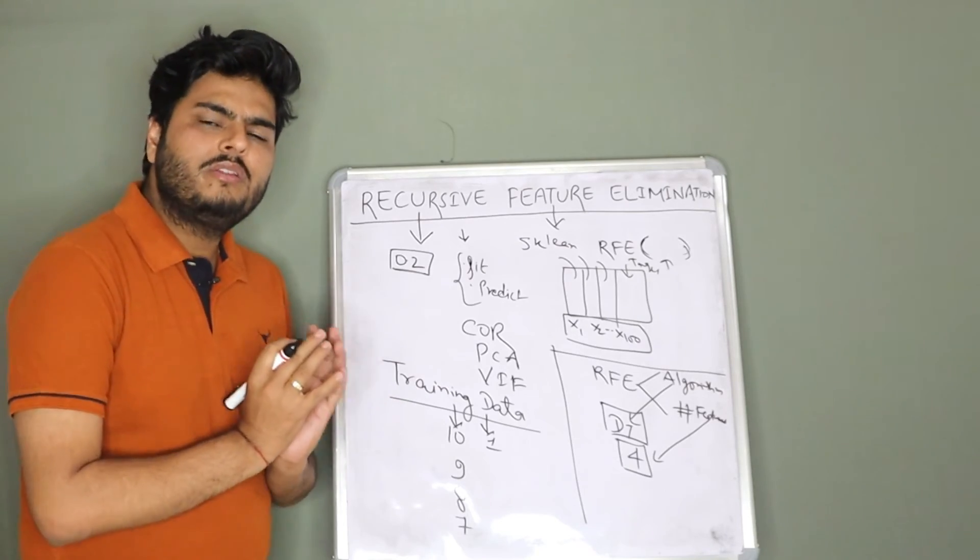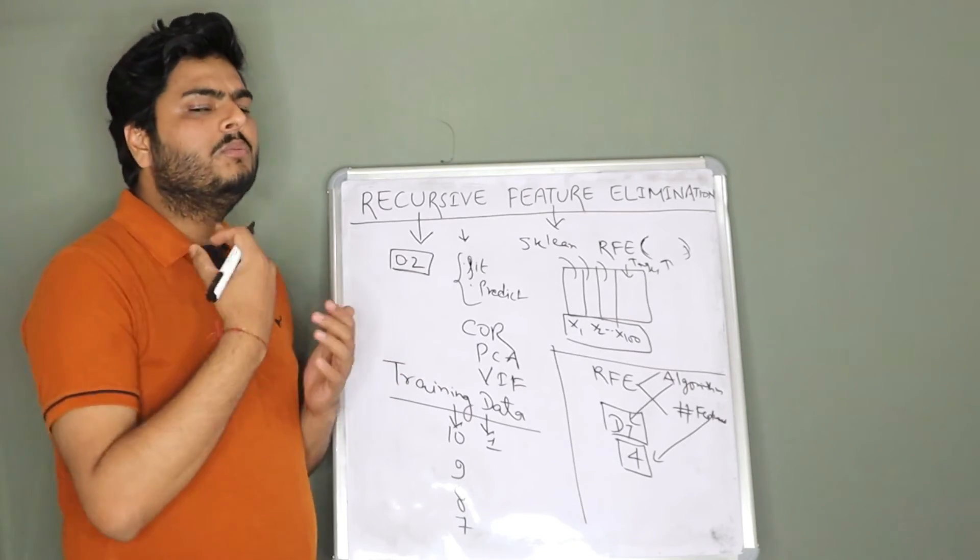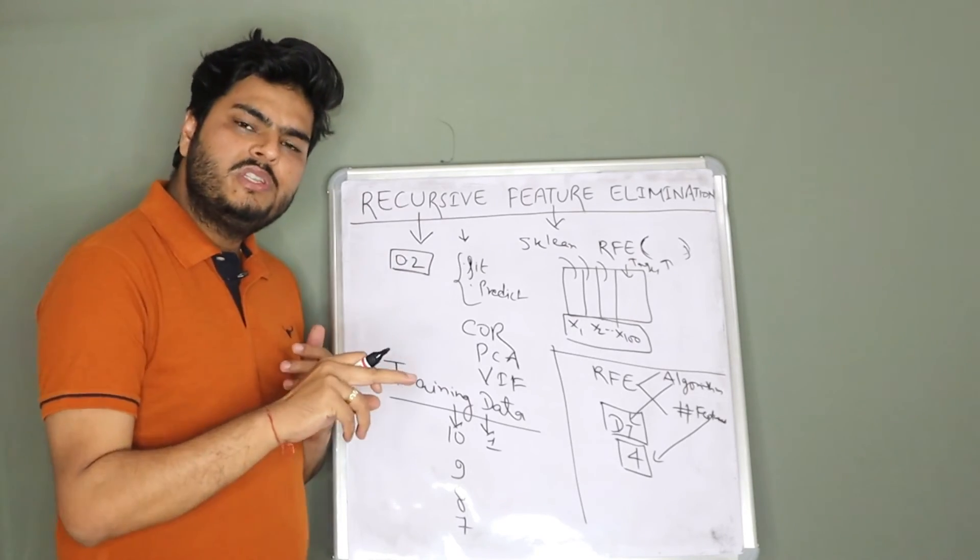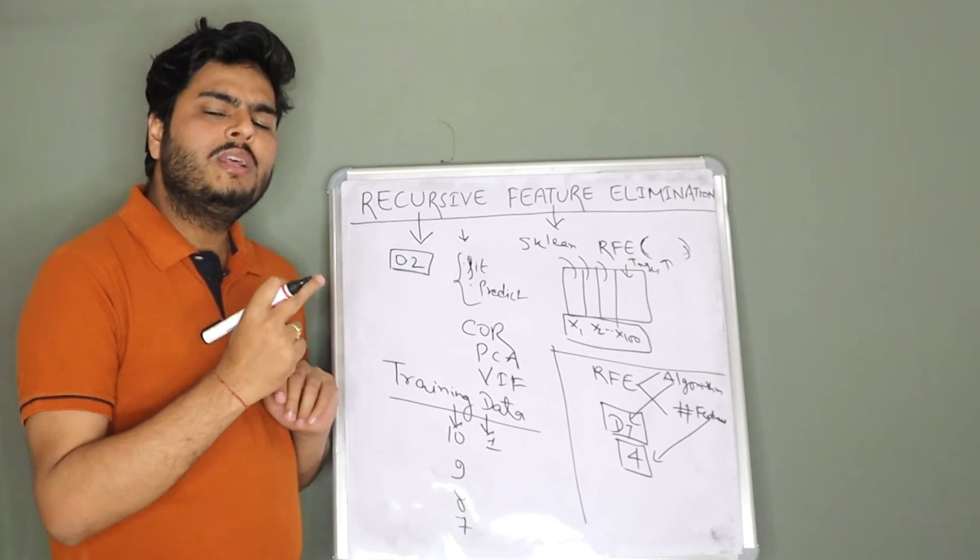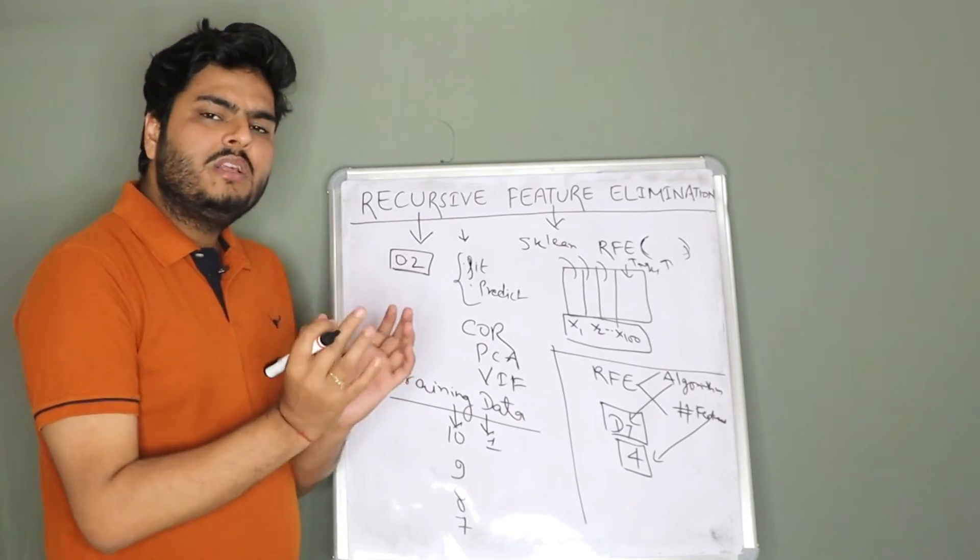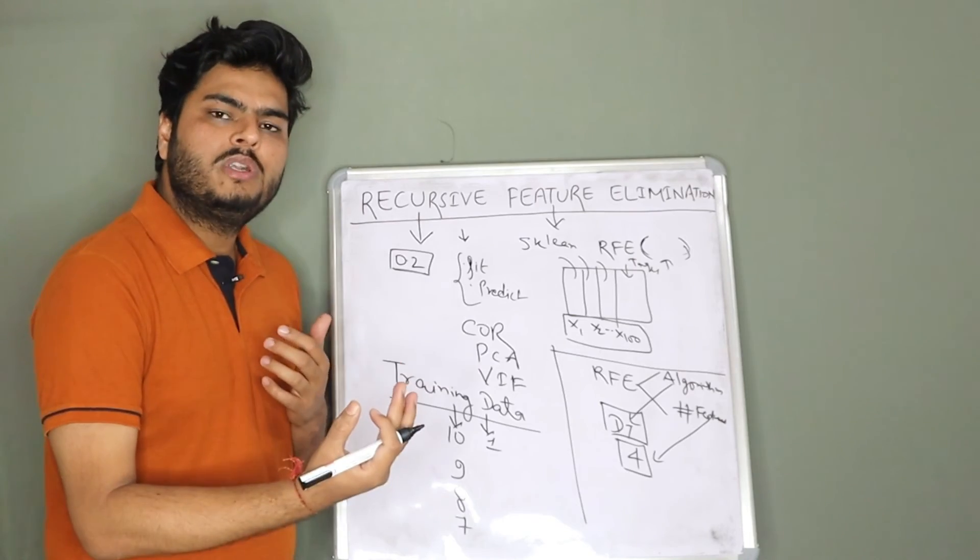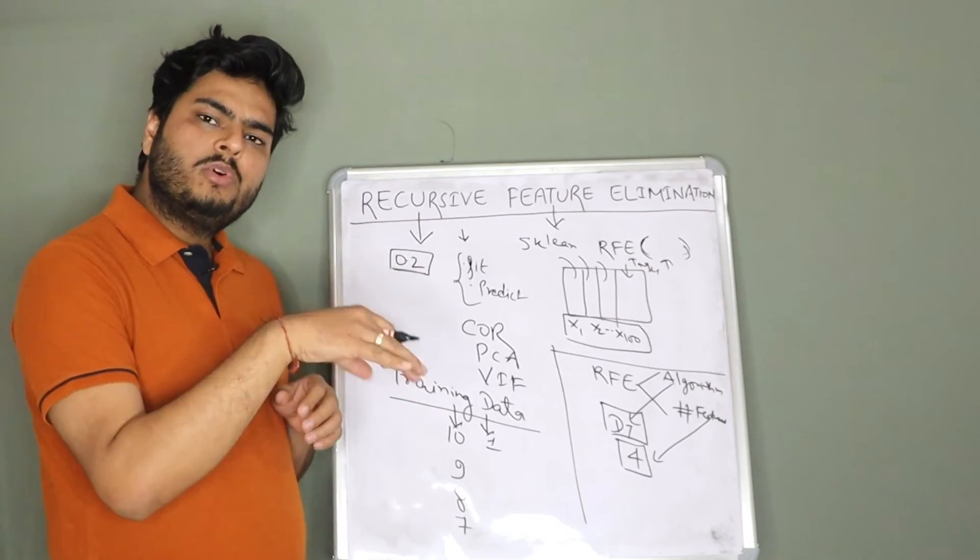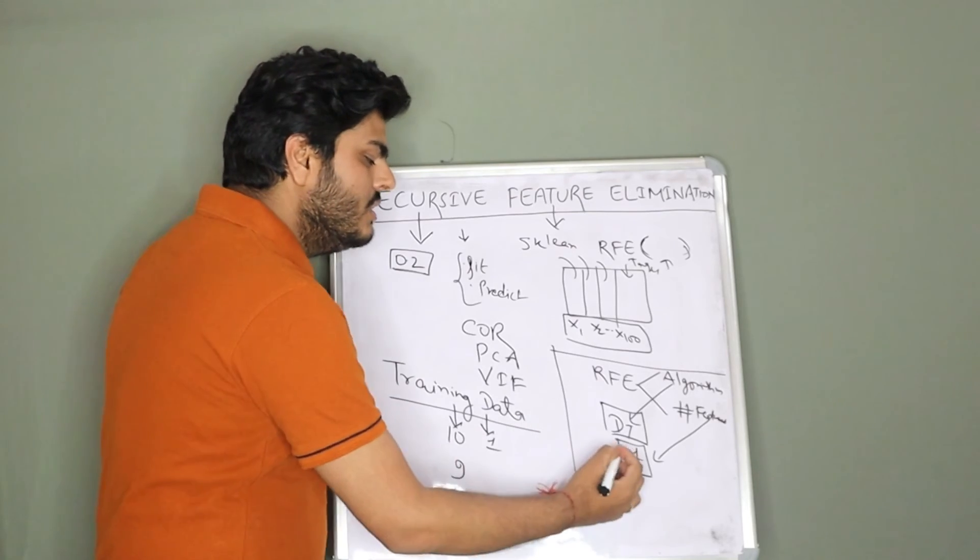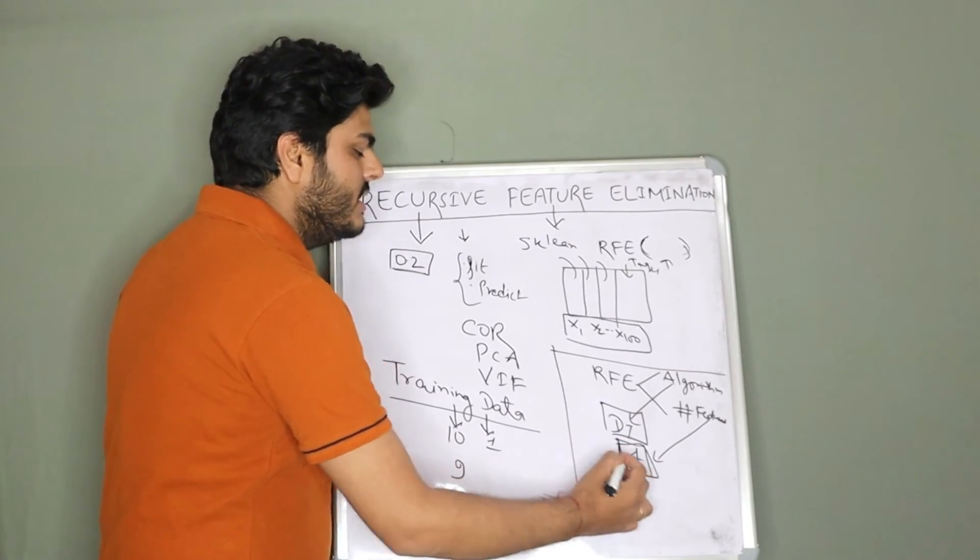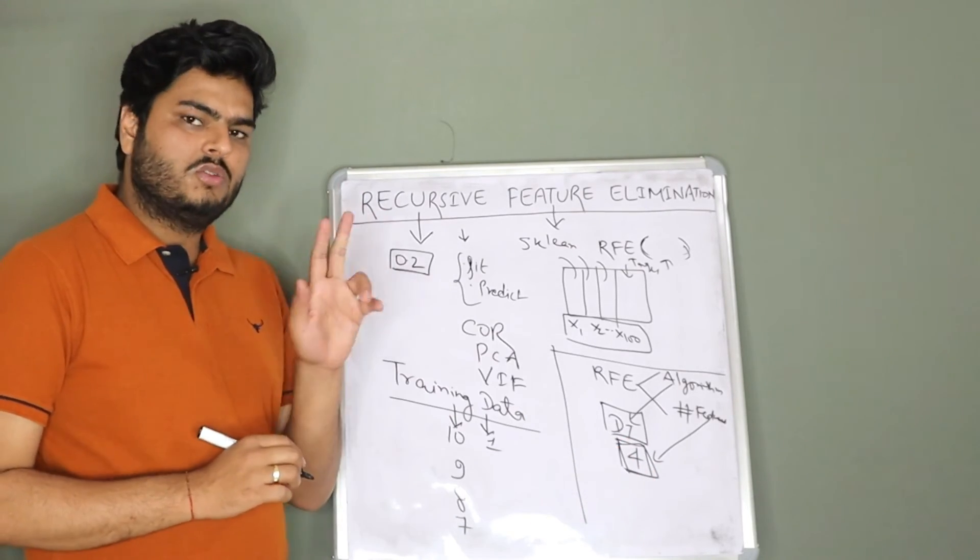The crux of RFE is take all variables, run model, see the importance of feature based on this parameter whether percentage removal or one by one removal. Remove the feature, take the remaining features, run the model one more time, see which features are least important, remove, run one more time and keep doing it until we reach how many features user wants. In this case, I am giving 4 features.